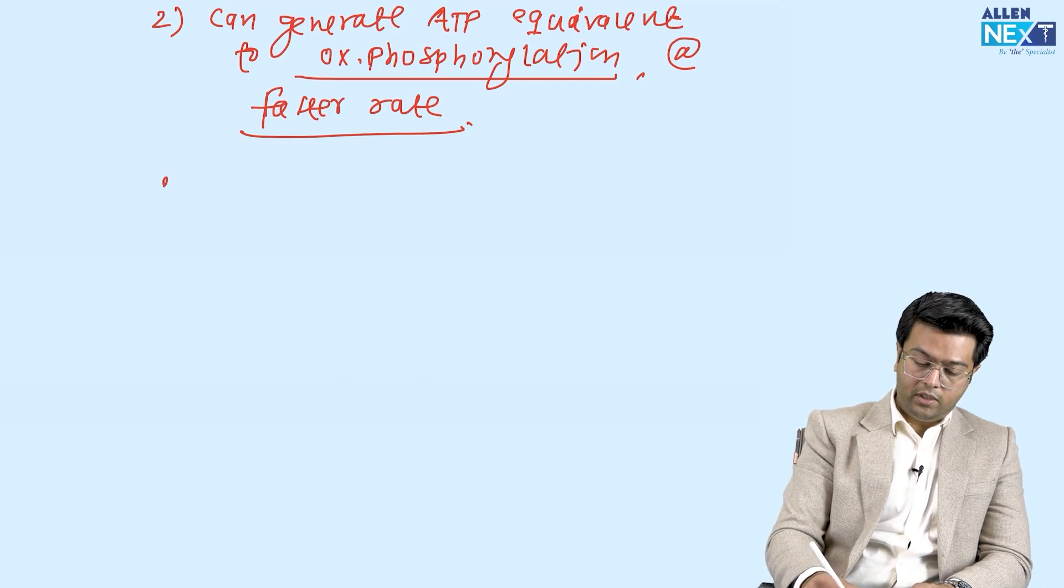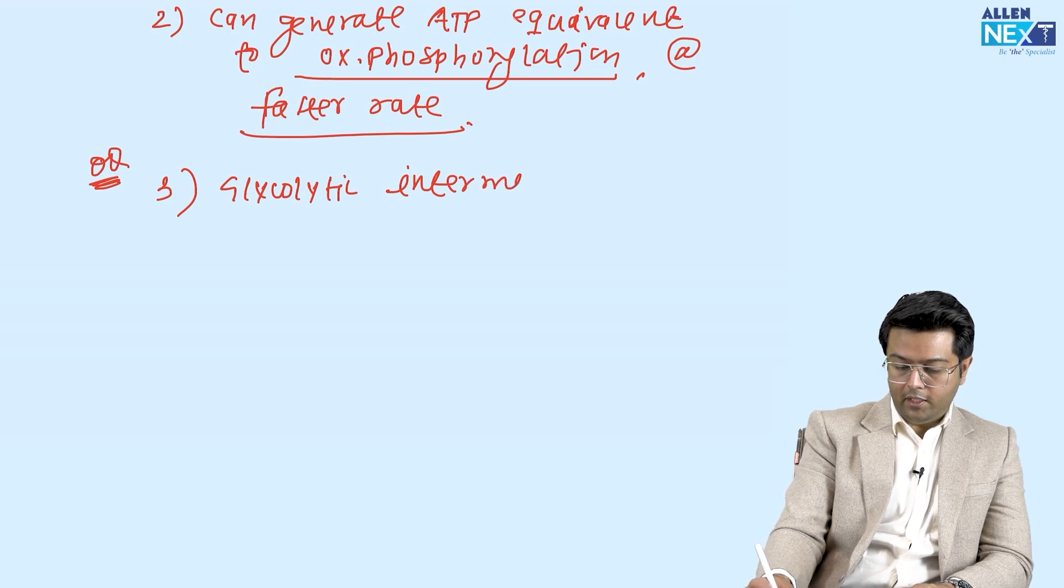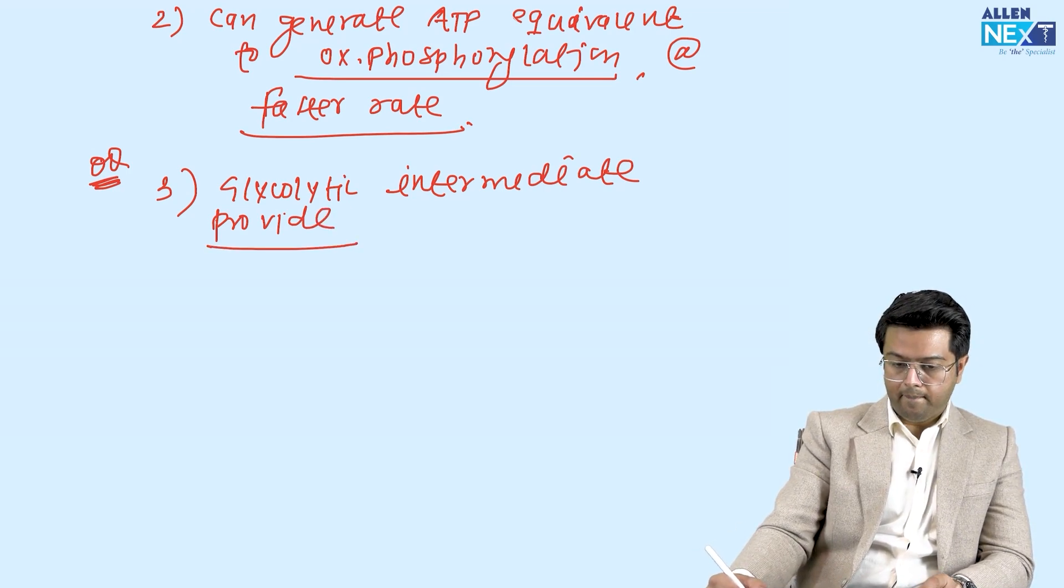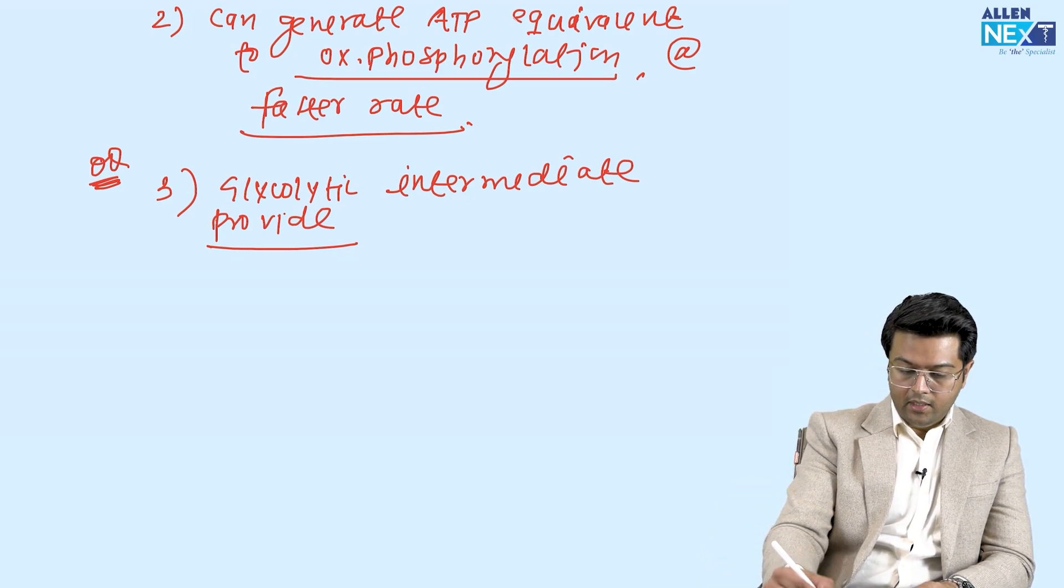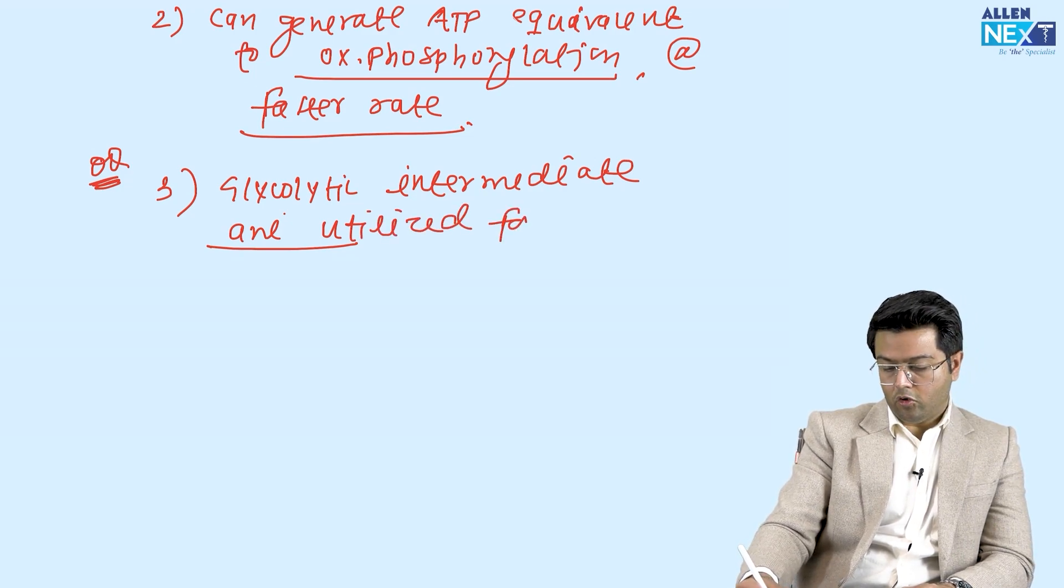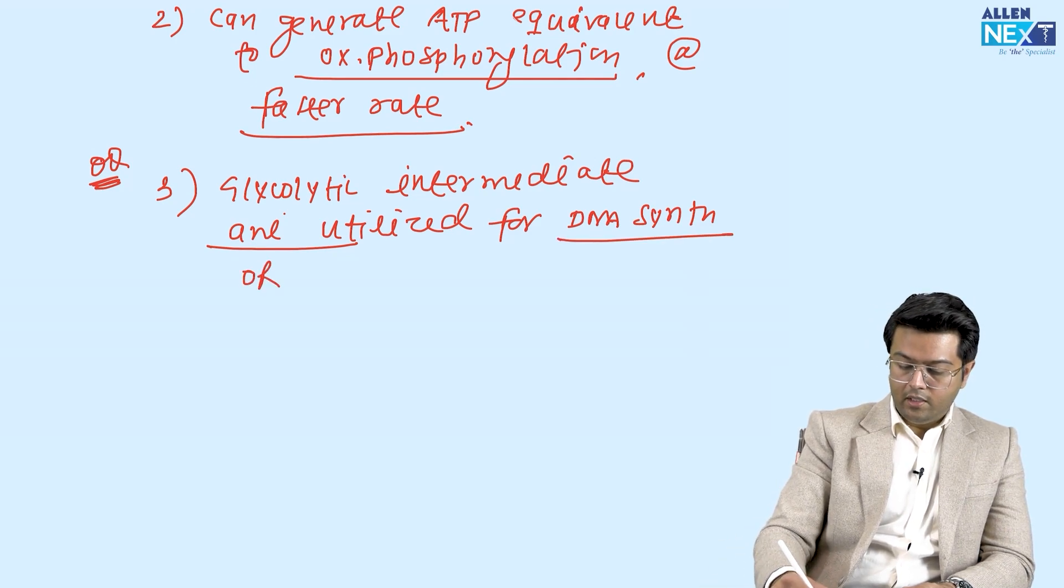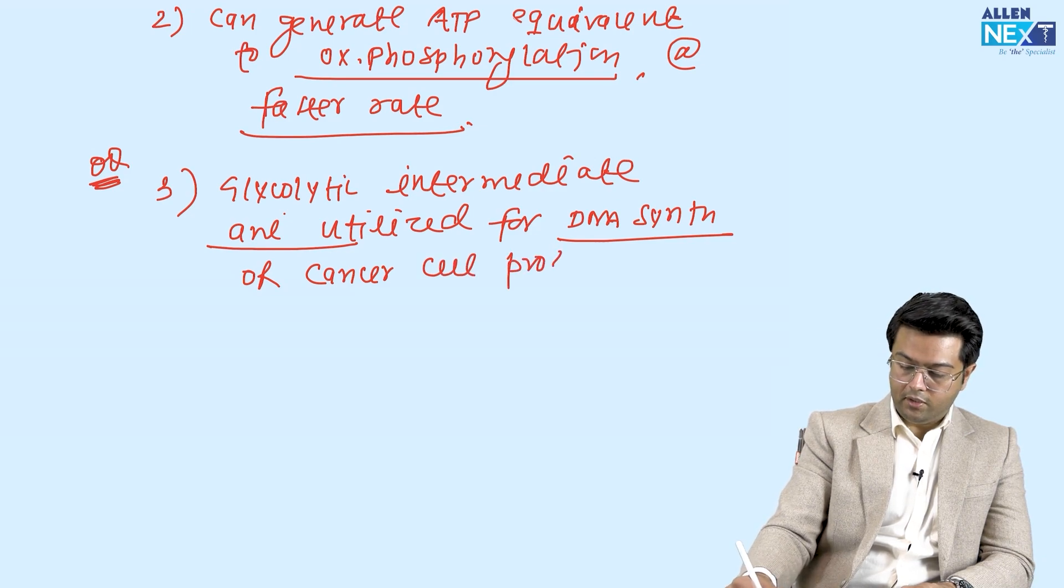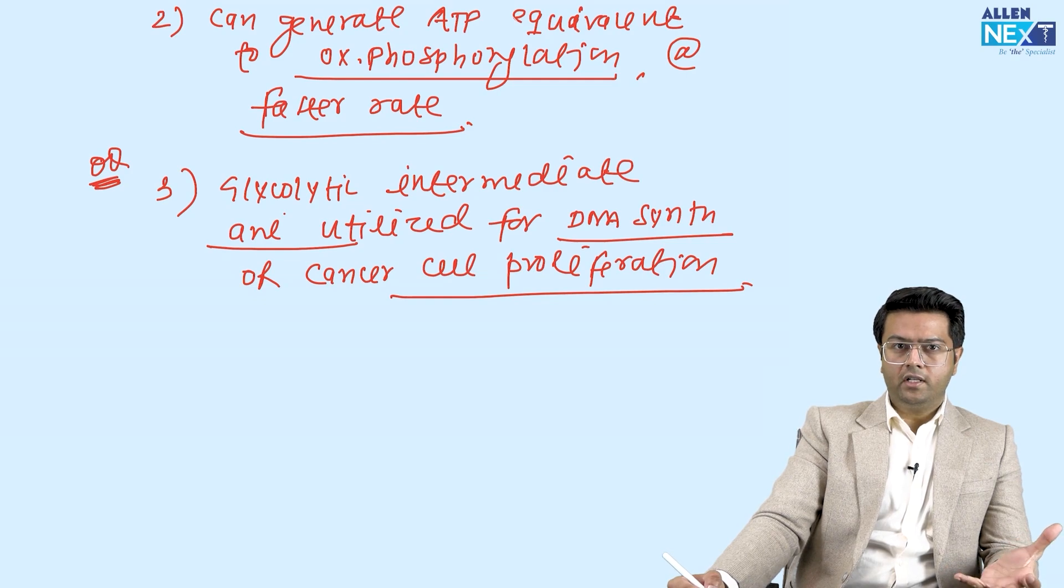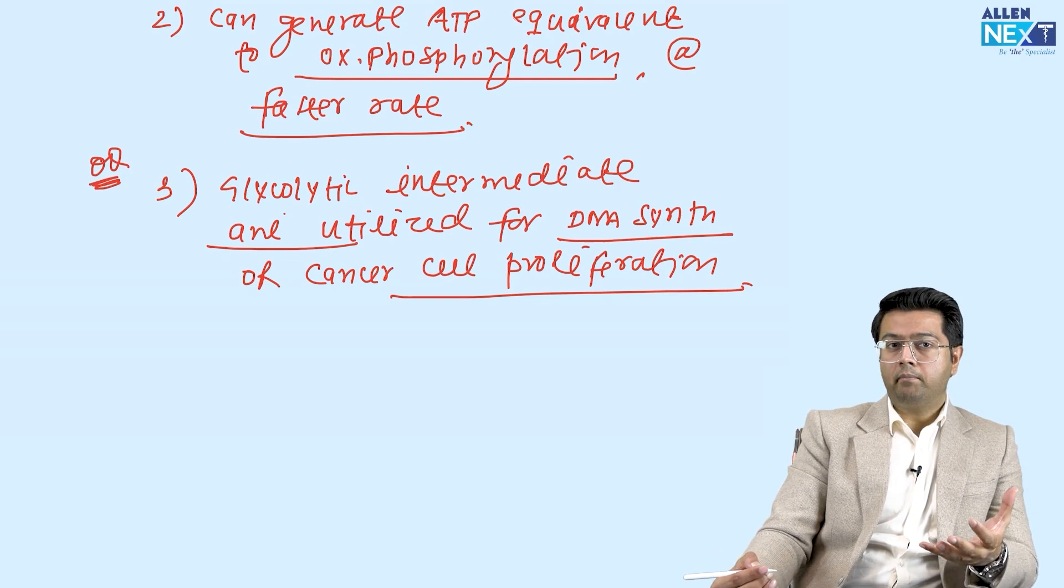One more point which is actually very important and has been asked in exams: glycolytic intermediates are utilized for DNA synthesis, that is purines or pyrimidine synthesis, or you can say cancer cell proliferation. And this is what cancer cells need. They need a source of their proliferation. So what is needed? They need DNA duplication. What is required for DNA duplication? We need the purines and pyrimidine synthesis. And to make the purines and pyrimidines, we need some pentoses. And pentoses are made by HMP pathway.